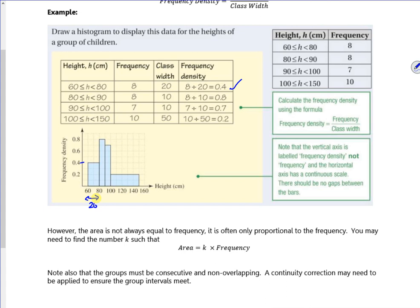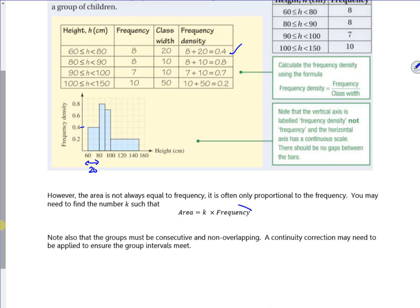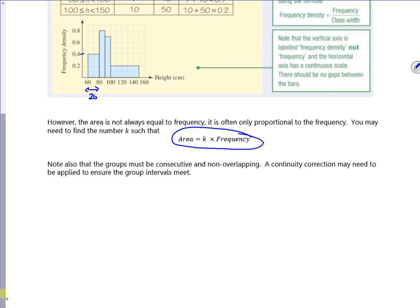Sometimes though, you might not be happy with those numbers. The 0.2, the 0.4, the 0.6, the 0.8. So what you can do is, you can scale it, and it gets a little messy when you scale it. There's no major issue. So instead of it just being the frequency divided by the width, I might want to scale these numbers to make it look better. Maybe some form of scale that I want to work with. So it says, note also that the groups must be consecutive and non-overlapping. Yeah, we know that.